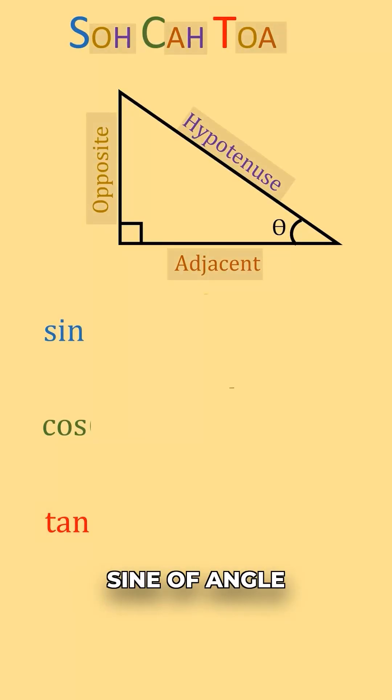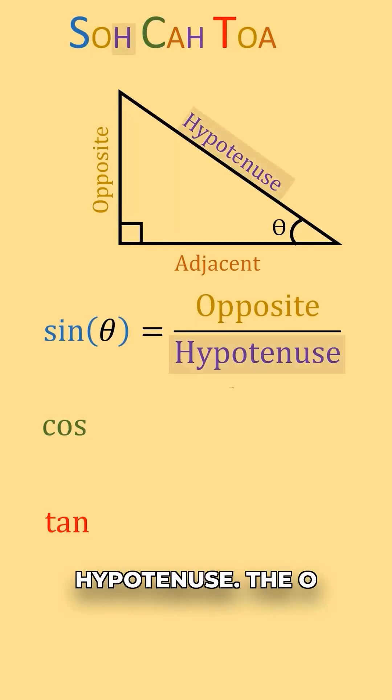In other words, sine of angle theta is going to be equal to the length of the opposite side over the length of the hypotenuse. The O in so tells us opposite, and the H in so tells us the hypotenuse.